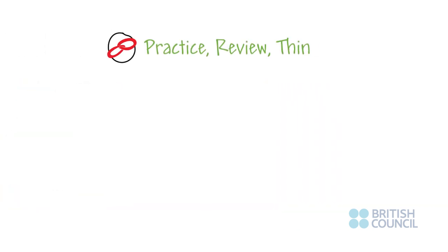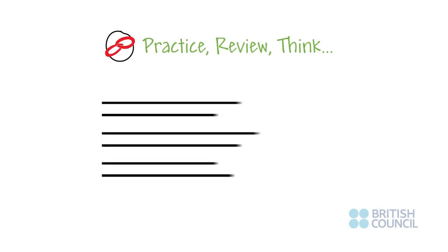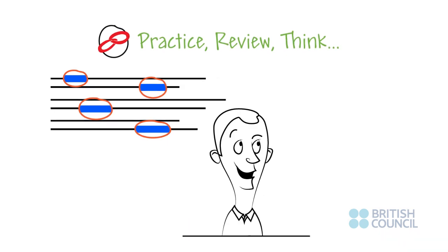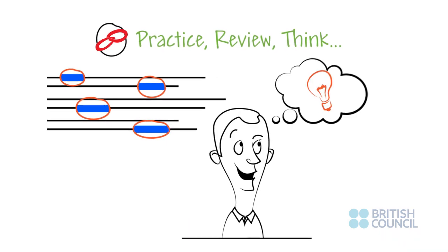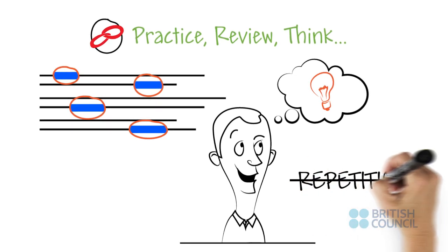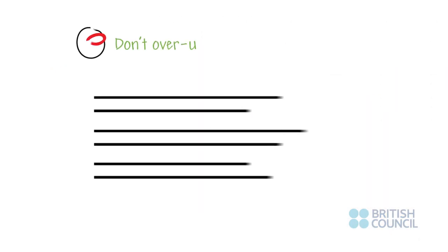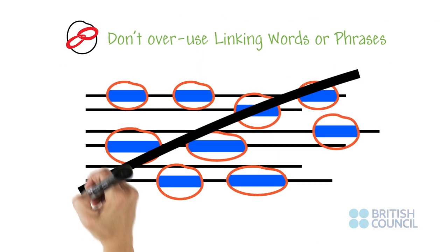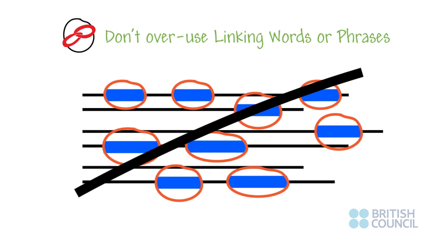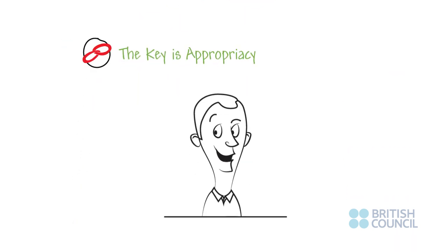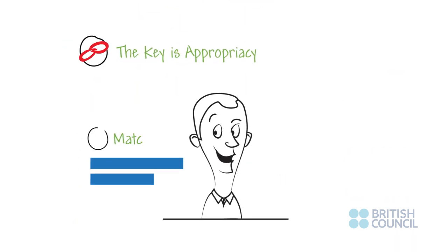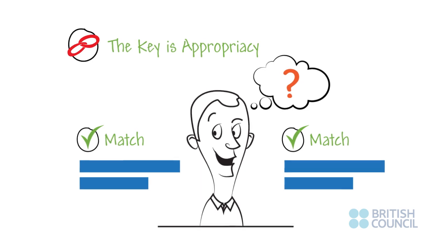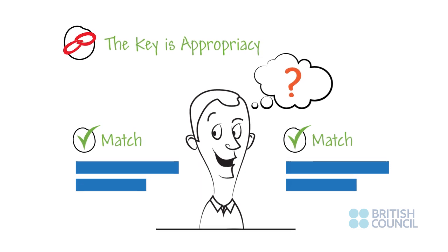As you practice writing essays, review your writing and circle the different linking devices. Then, think about how you could use different words to avoid repetition. Don't overuse linking words or phrases, however. This becomes irritating for the reader. The key in using linking words is appropriacy. Ask yourself: is this necessary and does it match the content that follows?